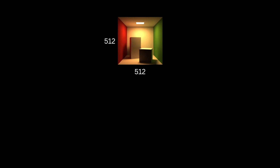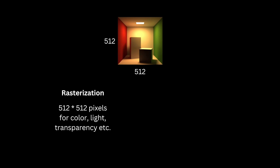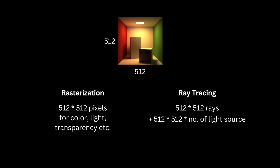Let's say we're rendering a 512×512 pixel scene. In rasterization, we evaluate 512×512 pixels — evaluating color, lighting, transparency, etc. In ray tracing, however, we first shoot 512×512 rays into the scene. Then to calculate lighting, we shoot another 512×512 × (number of light sources) rays. For reflective objects, we further reflect rays and shoot additional rays for each light. So that's N×N more rays overall. Ray tracing has significantly more overhead than traditional rasterization.